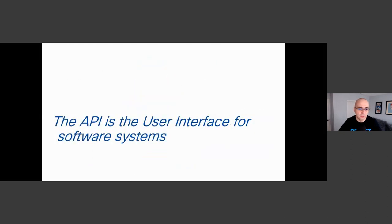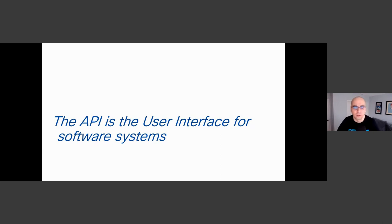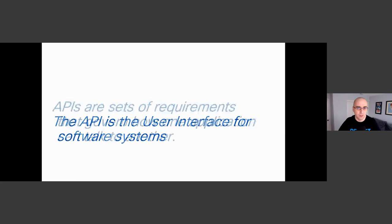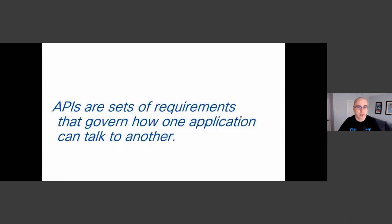You can think of the API as the user interface for software systems — similar to how humans have web pages to interact with web servers or graphical user interfaces to interact with software. APIs are these user interfaces but for software systems. At the same time, APIs are a set of requirements that govern how one application can talk to another — a set of rules or contracts that each API has to adhere to.